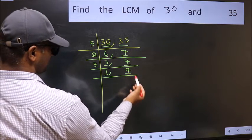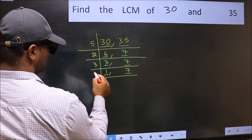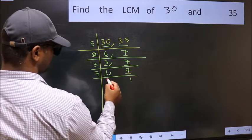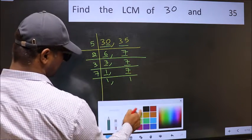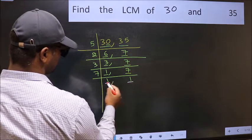So focus on the next number, 7. 7 is a prime number, so 7 divides into 7. So we got 1 in both places.